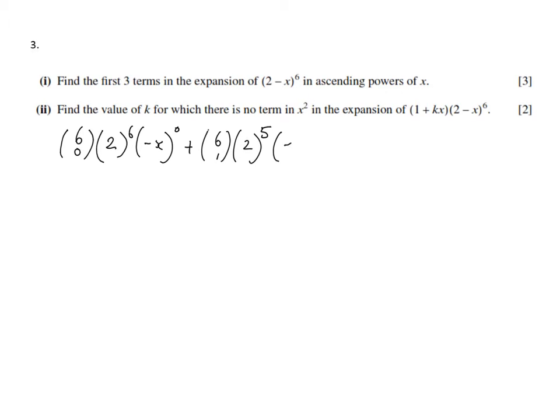My third term: (6 choose 2), then 2^4 times (-x)^2. So those are the first three terms. I'm just checking: 6+0=6, 5+1=6, 4+2=6. Okay, no silly mistakes there.